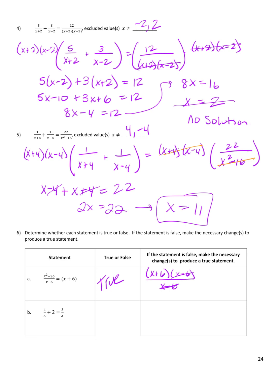Part B: 1 over x plus 2 equals 3 over x. They're asking if simplifying gives 3 over x. If I wanted a common denominator, I would write 1 over x plus 2x over x, which gives 1 plus 2x over x — and that is different from 3 over x. They likely tried to add the 1 and the 2x and just wrote 3, but it's 1 plus 2x, so this is false.